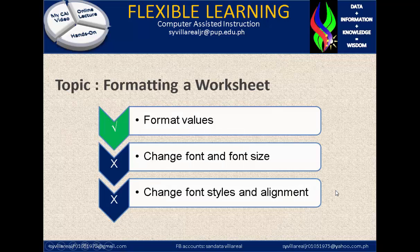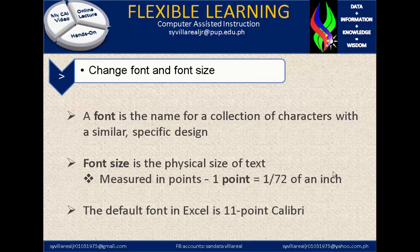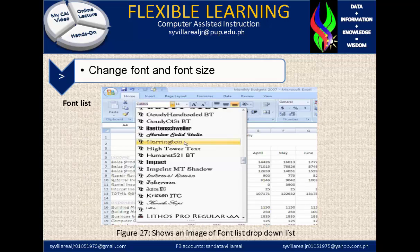Second topic: change font and font size. A font is the name for a collection of characters with a similar specific design. A font size is the physical size of text, measured in points. One point equals 1 over 72 of an inch. The default font in Excel is 11-point Calibri. Figure 27 shows an image of the font list drop-down list, where you can select the font name required for your projects.